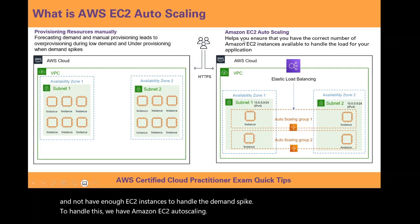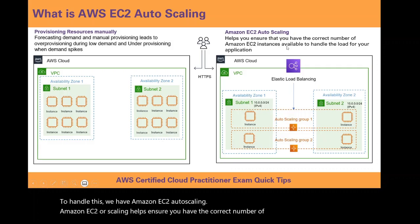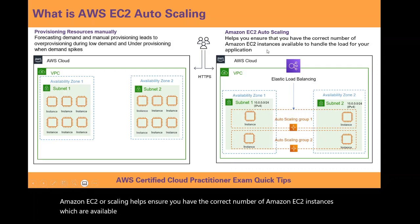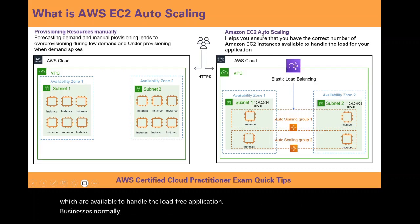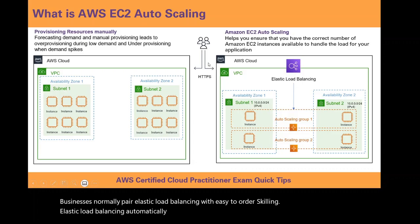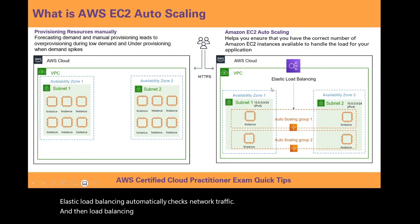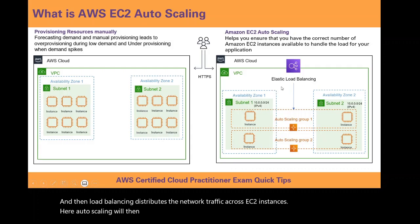Amazon EC2 autoscaling helps ensure you have the correct number of Amazon EC2 instances available to handle the load for your application. Businesses normally pair Elastic Load Balancing with EC2 autoscaling. Elastic Load Balancing automatically checks network traffic and then distributes that network traffic across EC2 instances.